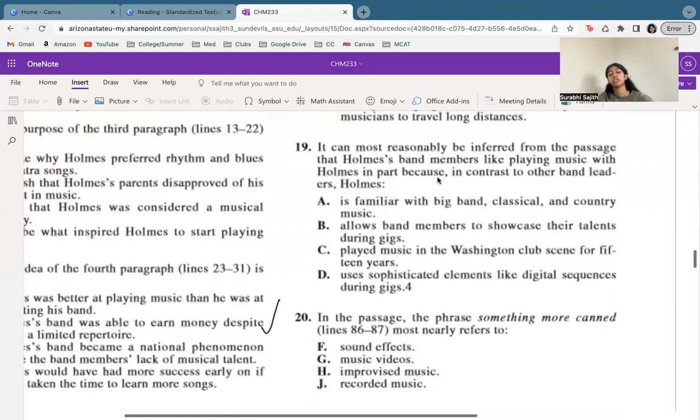Now, if we look at the last two paragraphs, it kind of talks about how Holmes band members like playing with him because they get to kind of do their own thing. They aren't stuck to a certain script or forced to do things a certain way. So with that in mind, which one is the best option? Definitely not A. C is true in that he did play in the club scene, but that's not why band leader or the band stays, right? The band members stay because they're allowed to show their talents during the gigs. And that's why B is correct.